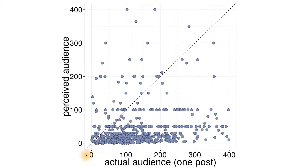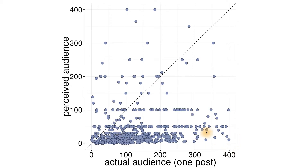One of the things that stands out within the scatter plot is that you see these horizontal stripes. That's because people are guessing these round numbers — you see a really clear stripe at about 50, another really clear stripe at 100, and a little bit of a stripe at 200.